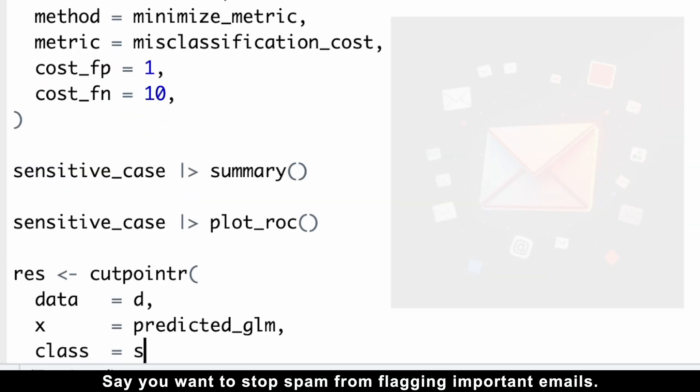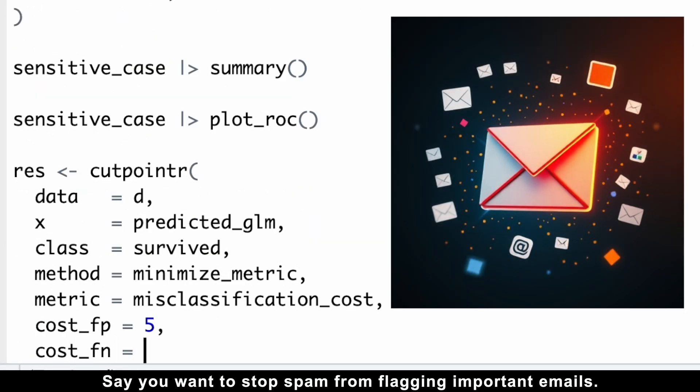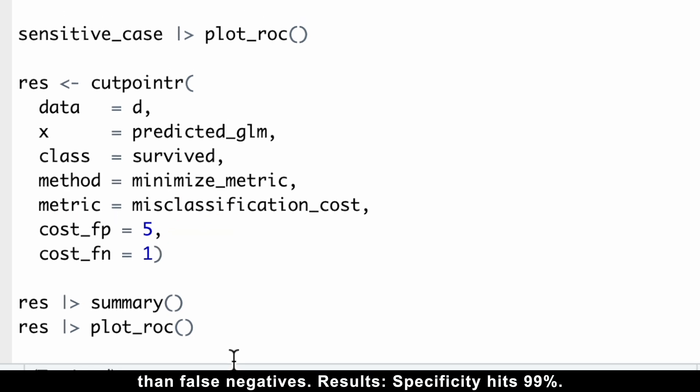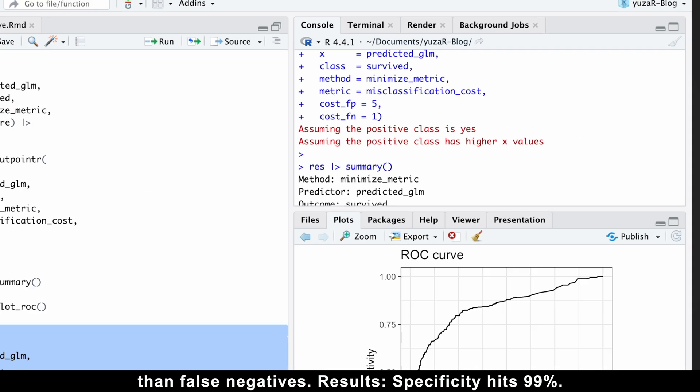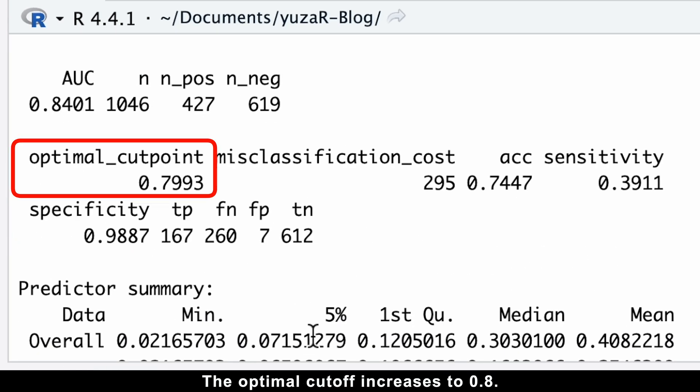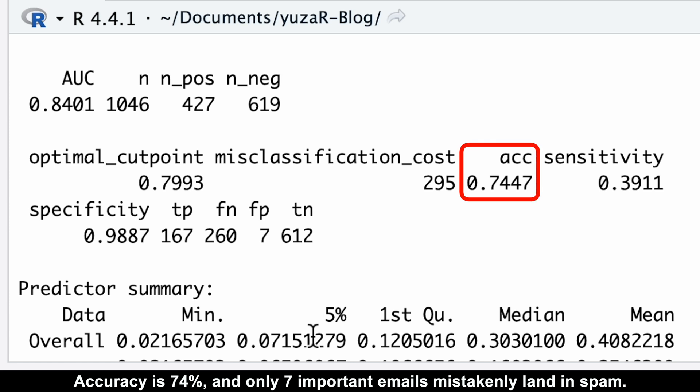Now let's flip it. Say you want to stop spam from flagging important emails. Here, set the cost of false positives to be 5 times higher than false negatives. Results? Specificity hits 99%, the optimal cutoff increases to 0.8, accuracy is 74%, and only 7 important emails mistakenly land in spam.